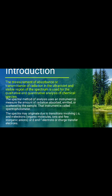Introduction. The measurement of absorbance or transmittance of radiation in the ultraviolet and visible region of the spectrum is used for qualitative and quantitative analysis of chemical species. Spectral methods of analysis use an instrument to measure the amount of radiation absorbed, emitted or scattered by the sample. That instrument is called a spectrophotometer. The spectra may originate due to transitions involving I, O and N electrons, organic molecules, ions and a few inorganic anions, or d and f electrons, or charge transfer electrons.